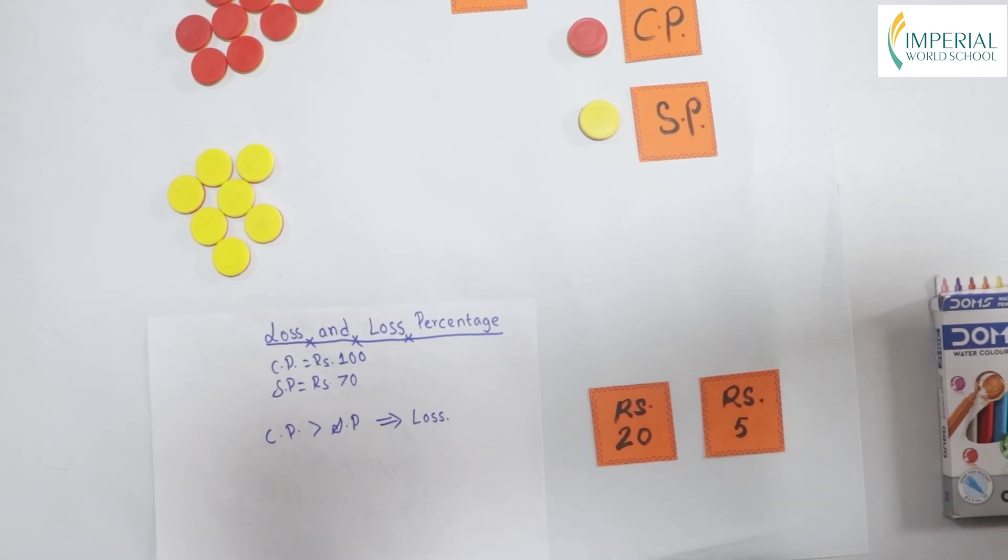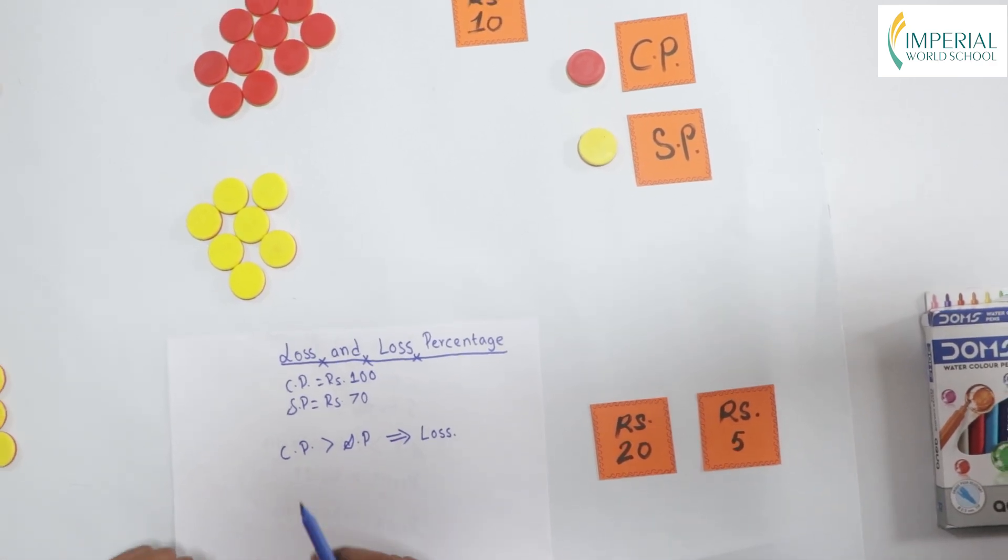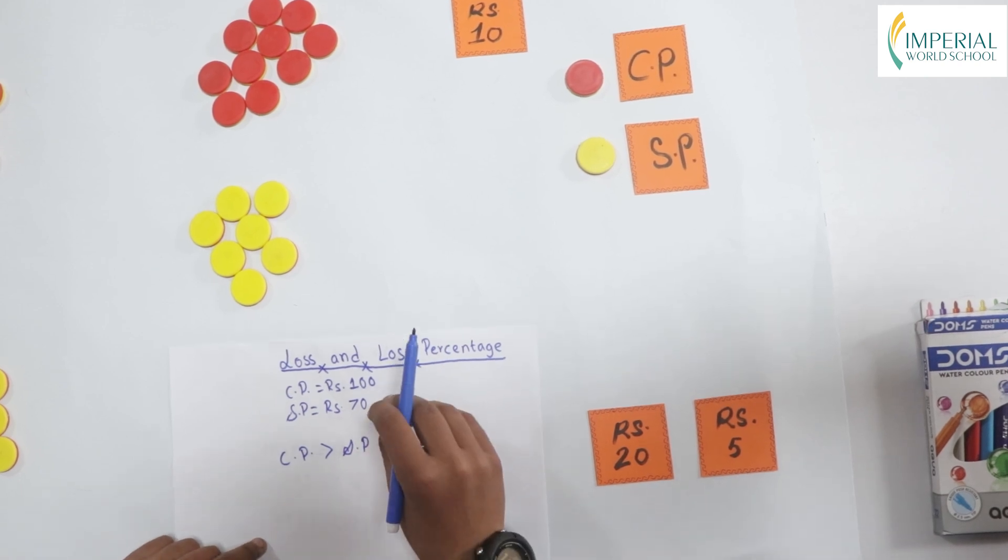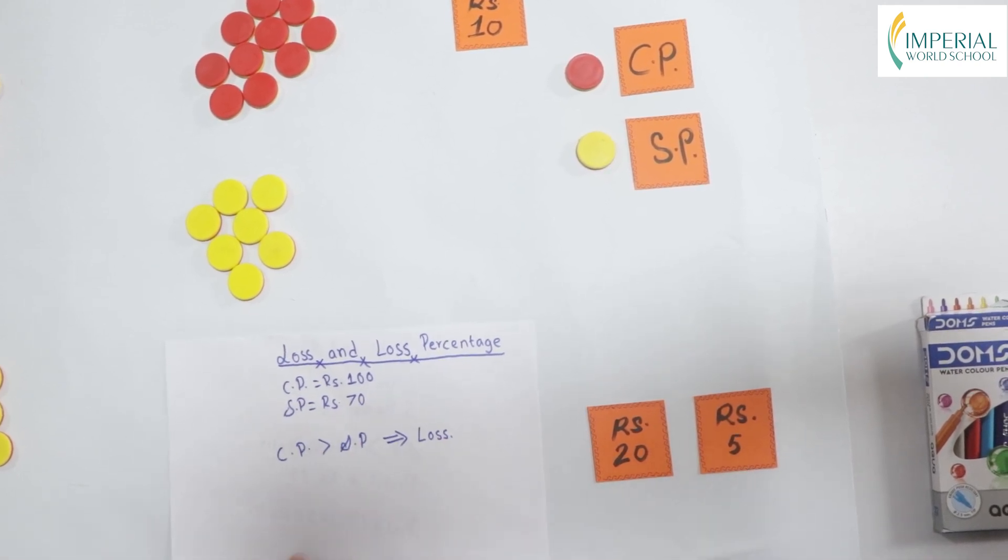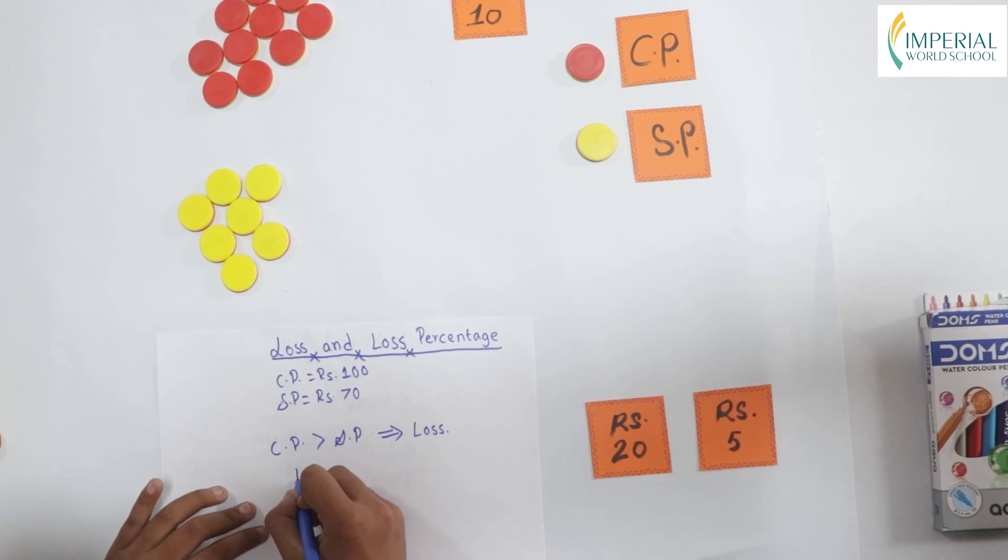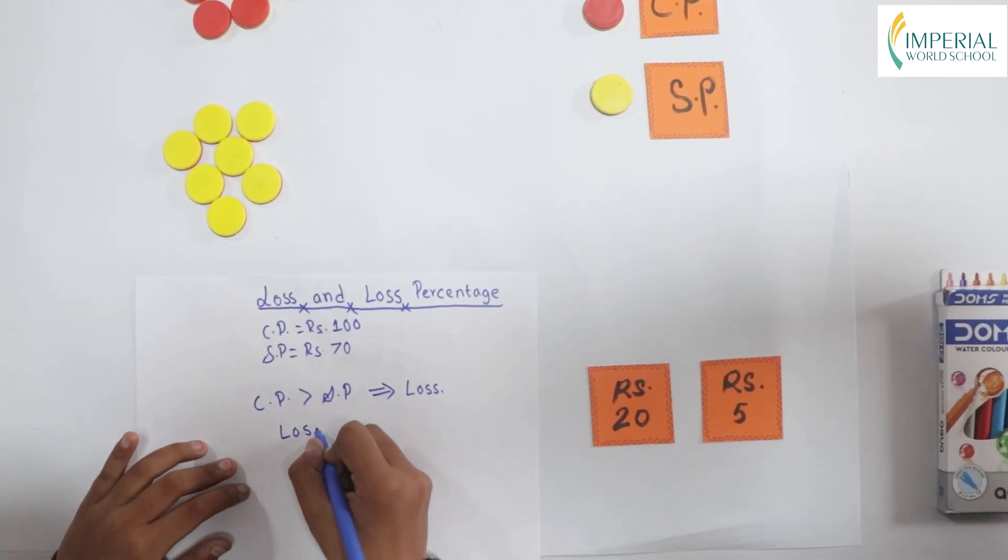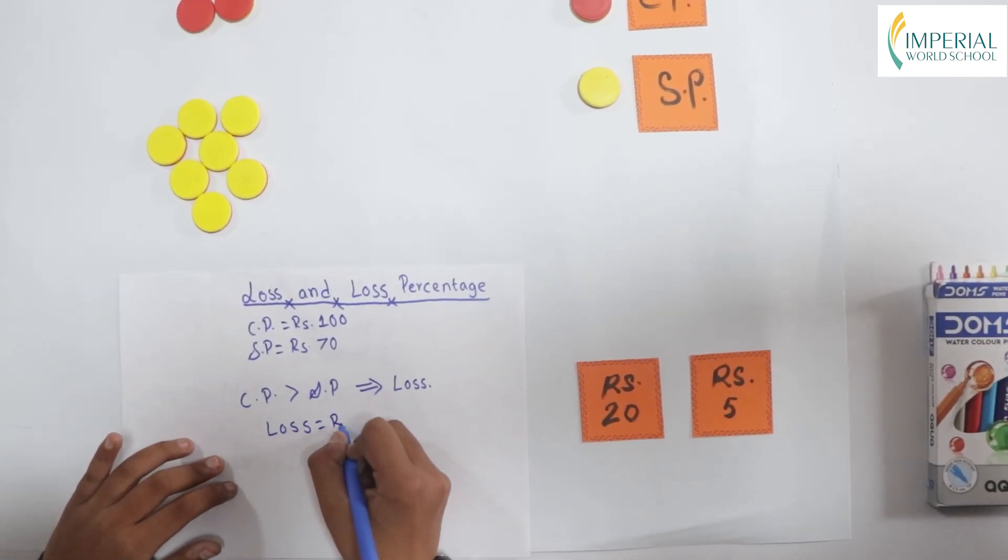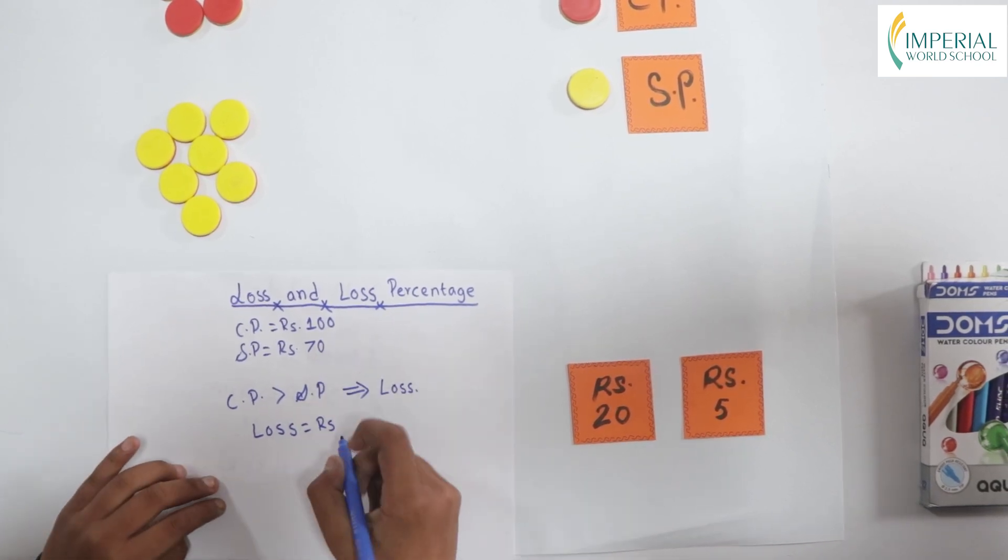Now, let's find our loss amount. Let's subtract selling price from cost price. Our loss will be 30 rupees.